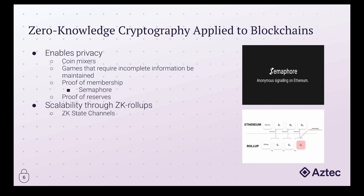Moving on to games — prior to zero-knowledge proofs, there really wasn't a great way to play games that require incomplete information. Let's say you have a game that requires two players, and there's some piece of information that, if known, will compromise the playability of a game. Battleship is a great example, Mastermind is another, and another game well known in the ZK realm is Dark Forest, which implements a cryptographic fog of war. It allows you to hash through and discover new territory and planets to conquer, and if it weren't for this masking mechanism through the fog of war, all positions of all planets would be known to everyone and no challenge would be involved.